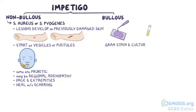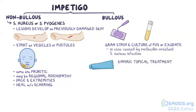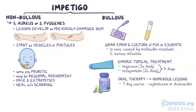A gram stain and culture of pus or exudate should be obtained in case it's caused by methicillin-resistant S. aureus infection. Empiric topical treatment is usually given, and common choices include mupirocin applied 3 times daily, and retapamulin applied twice daily, both for 5 days. Oral therapy is given to those with numerous lesions, usually a 7-day course of cephalexin or dicloxacillin.